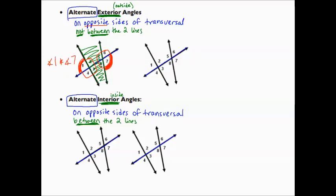Looking at another diagram: here are the two lines crossed by the transversal. Scribbling out what's inside since we want the exterior angles. This time I could pick an angle below the transversal, and on the opposite side from the other intersection would be something above. So, angle four and angle six are also alternate exterior angles.